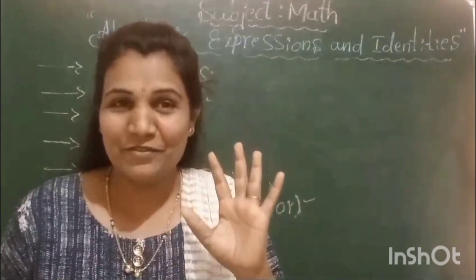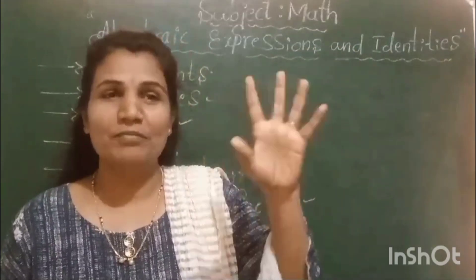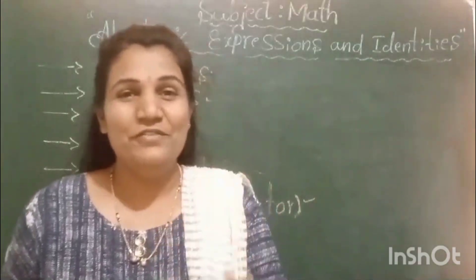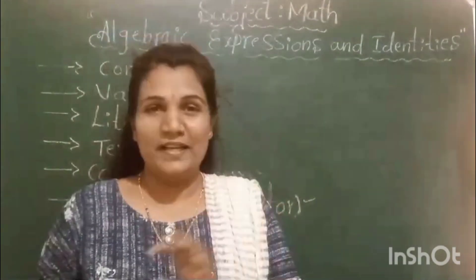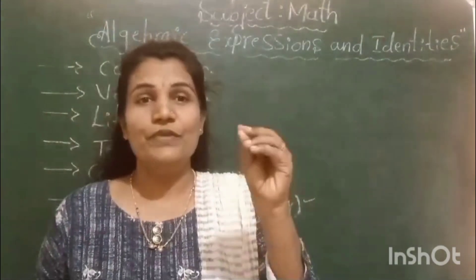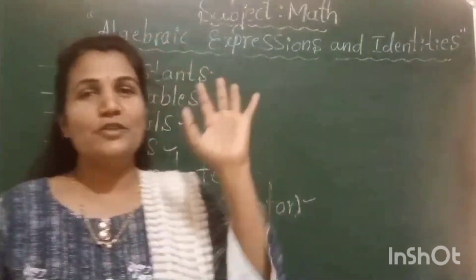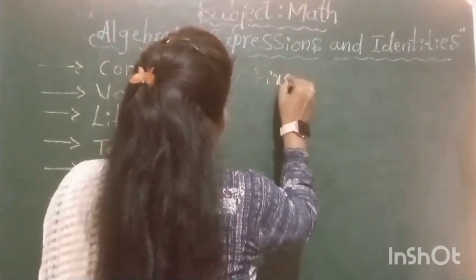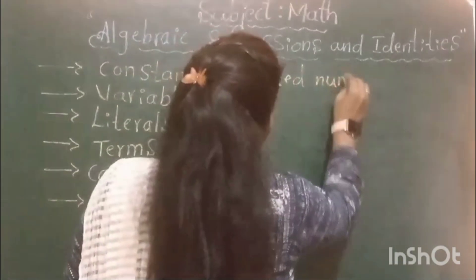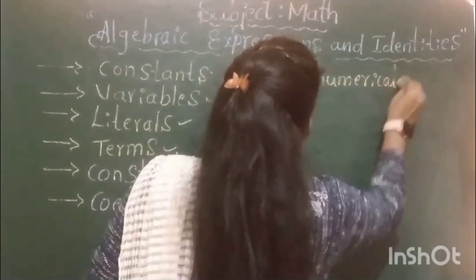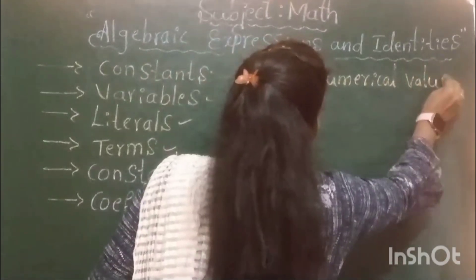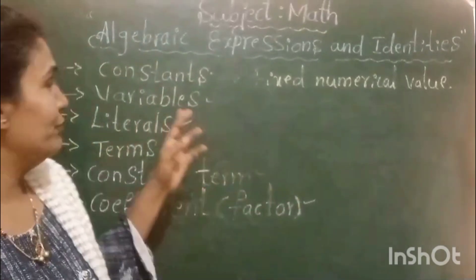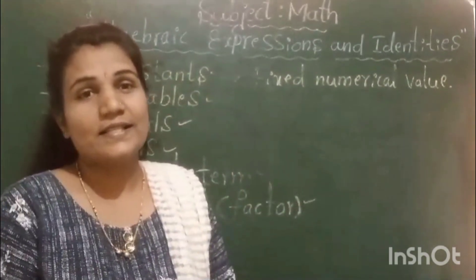By hearing the word itself we can say constant means something fixed — a fixed value. A constant is a quantity which has a fixed numerical value. Numerical value is nothing but numbers, so all numbers will come as examples for the constant.